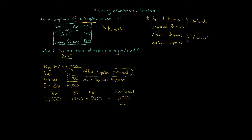Office supplies are an example of prepaid expense. Other types include prepaid rent and prepaid insurance — things you're paying for that will be used in the future and then go away, becoming the past. Accounting adjustments are all about timing: assets purchased or liabilities recorded that will turn into a revenue or expense in the future. Assets become expenses; liabilities can become revenues.